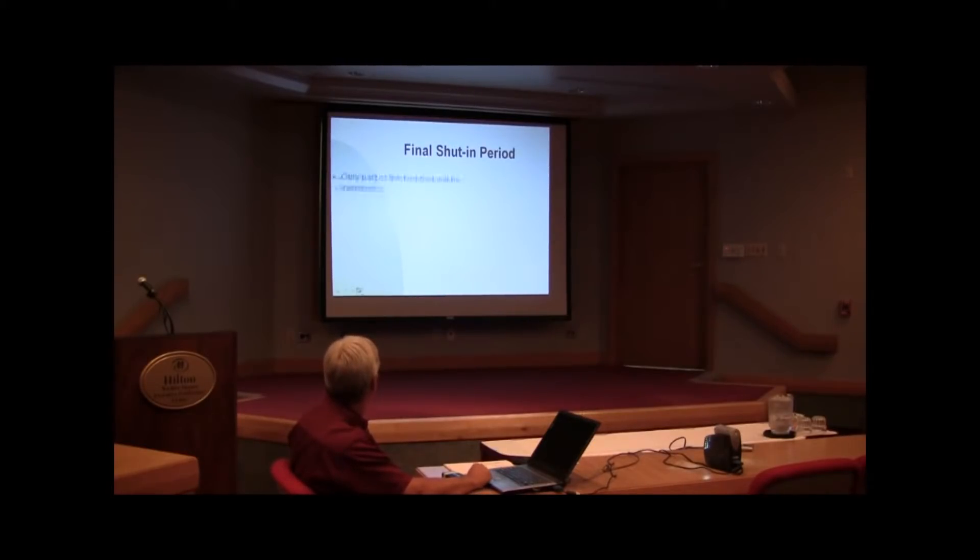The final shut-in is the only part that's typically interpreted. Three to five times length of the flow period. Longer is better, it makes my job a whole lot easier. If it's too short, there's introduced uncertainty into P-I and P star. The shorter the shut-in and the more inflections on that derivative curve, the more difficult it is to forecast the pressure out.